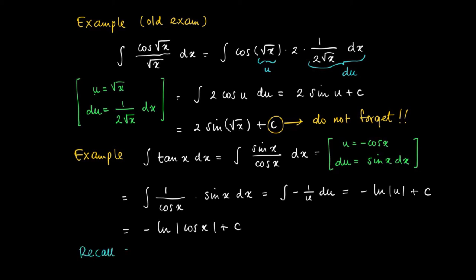So recall here that we made some convention regarding the c. The function minus 1 over x has a primitive which could have different constants depending on whether x is smaller than 0 or x is larger than 0. So recall the conventions concerning the integration constant.